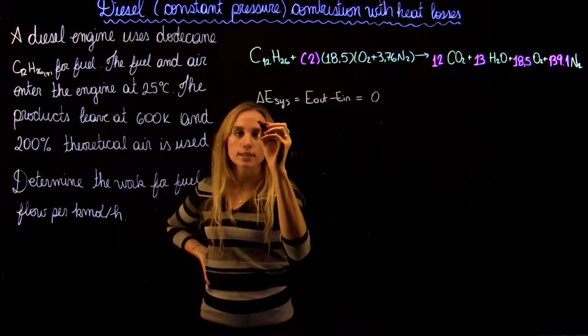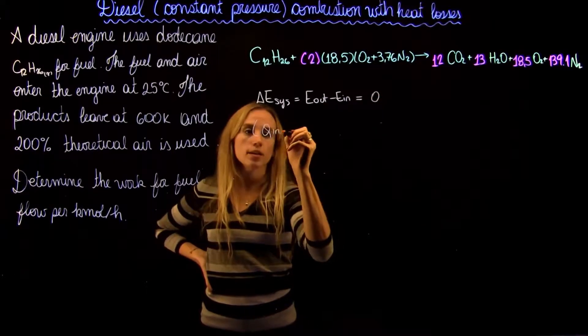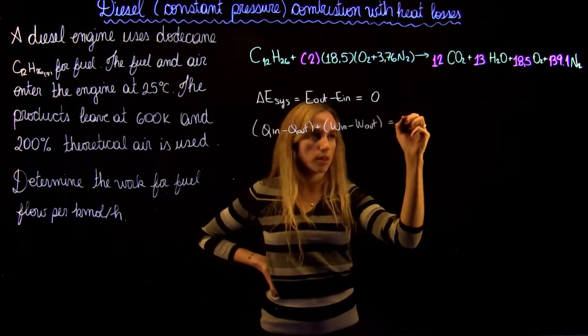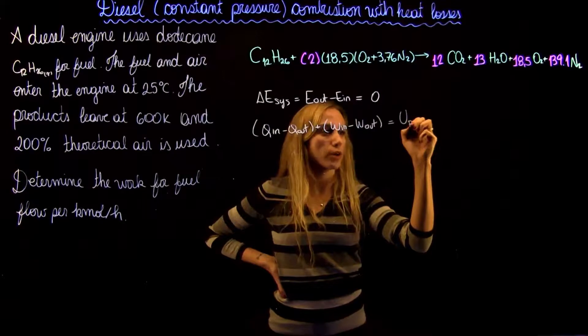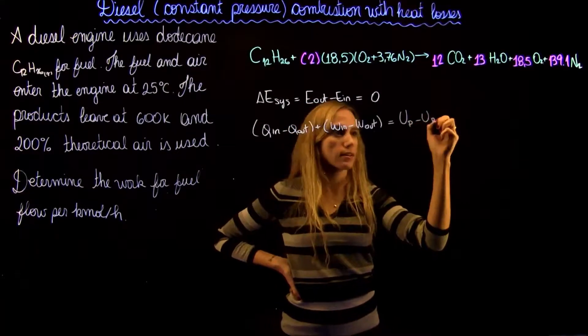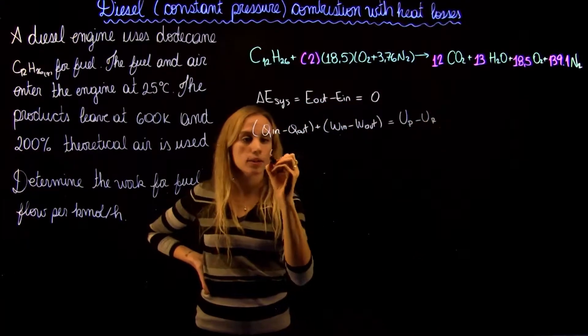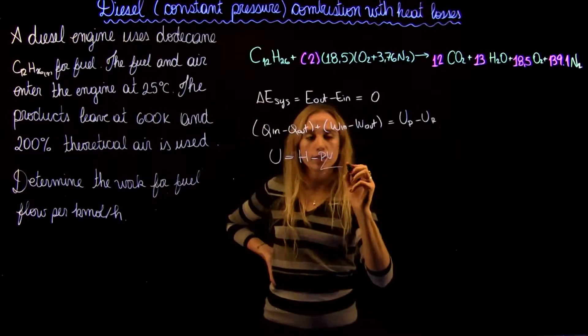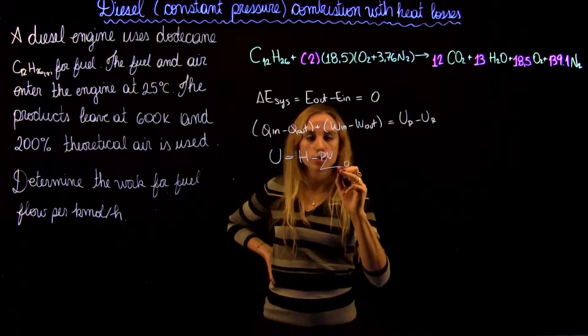So we can rewrite this as Q in minus Q out plus work in minus work out equals the U of the product minus U of reactants. And we can recall that we can rewrite this as H minus PV. And we can neglect PV for solids and liquids, so this can be zero in our case.